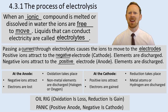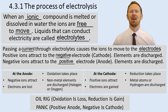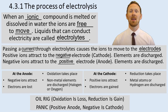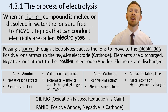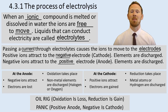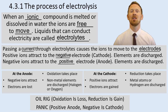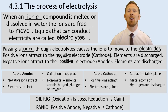So what happens at each of the electrodes? That's what you've got to know. Let's start at the anode. At the anode, the negative ions are attracted. When they get there, they lose electrons. Remember OIL RIG — oxidation is loss. So oxidation takes place at the anode, the positive electrode.